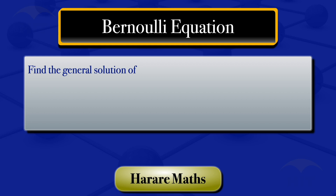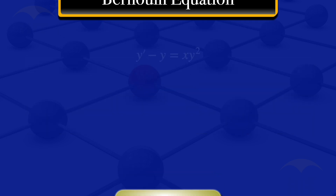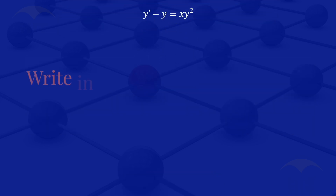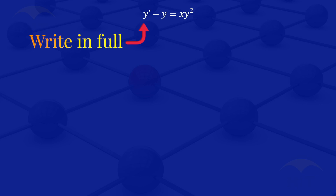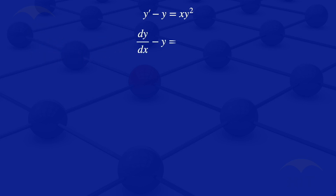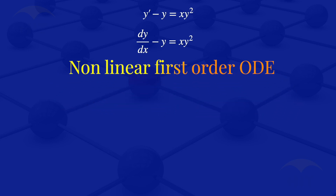In this video I am going to find the general solution of the ODE: Y prime minus Y is equals to X multiplied by Y squared. We are given that first order ODE. Writing Y prime in full, we have the derivative of Y with respect to X minus Y is equals to X multiplied by Y squared. What we see there is a non-linear first order ODE.